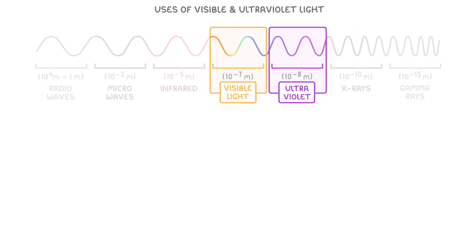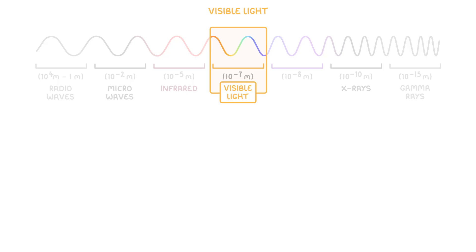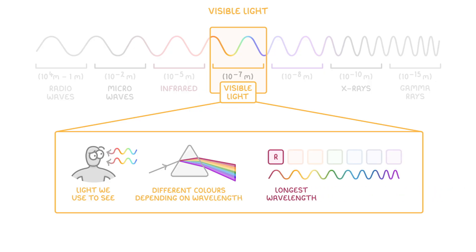In this video we're going to look at the uses of visible and ultraviolet light. Visible light is the light that we use to see and appears different colors depending on the wavelength, with red being the longest wavelength and violet being the shortest.